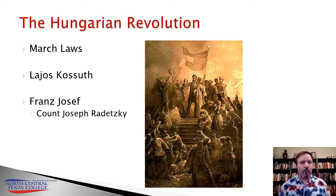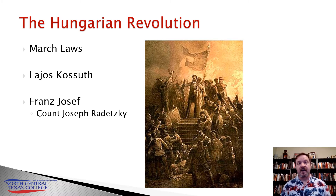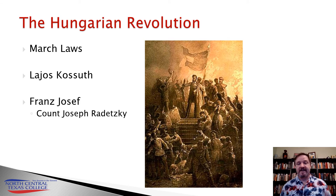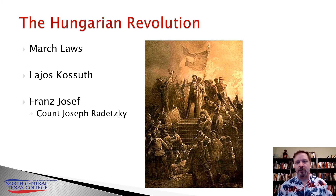In 1849, the National Assembly was dissolved and a new authoritarian constitution was imposed that would be maintained until the 1860s, when finally Franz Josef agreed to a dual monarchy for the Hungarians in what would be called the Ausgleich.